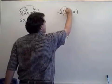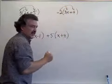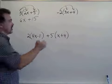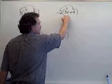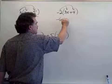If I remove the parentheses here, I again do it by distributing the multiplication. Negative 2 times 3x is negative 6x.